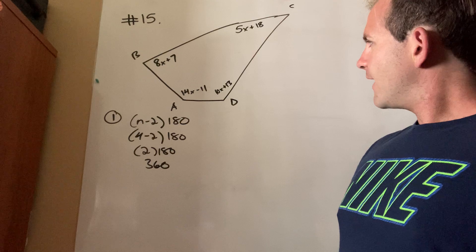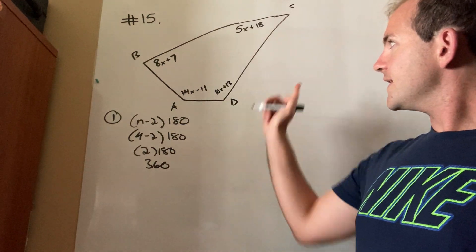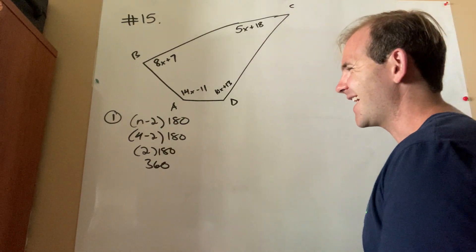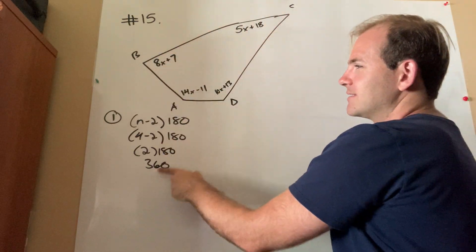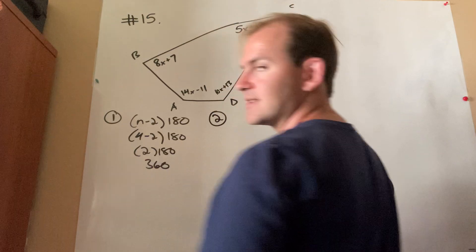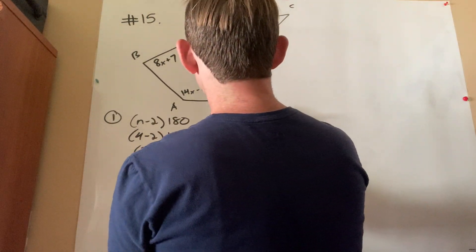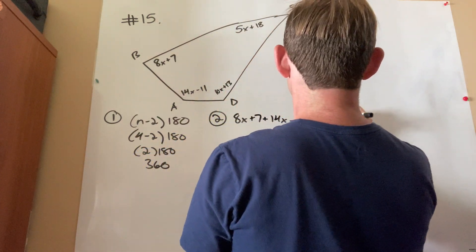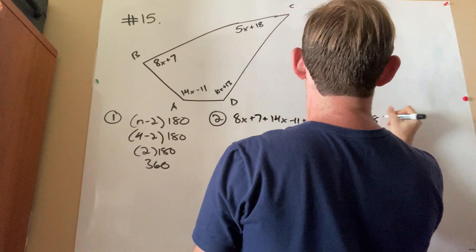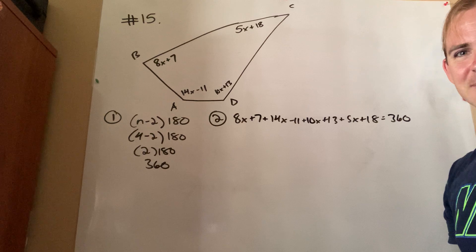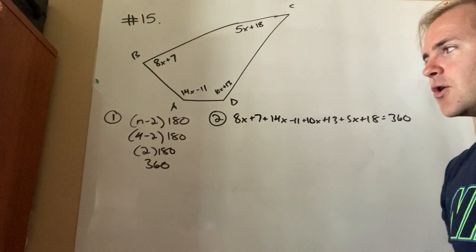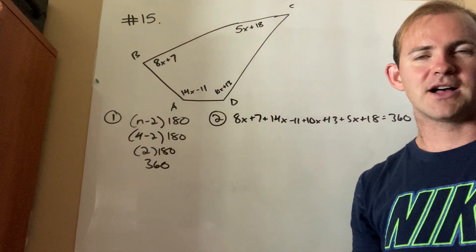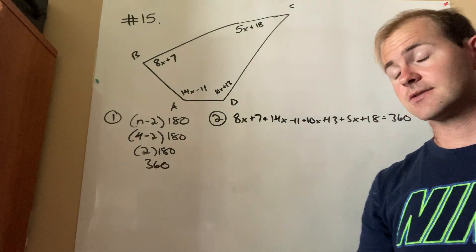Okay, so if there are 360 degrees inside, can you guys tell me what the equation would be that I should set up? Guess what? Combine like terms and solve. So, I add all of these up and set them equal to 360. So, step 2 here would be to write this ginormous equation. Let's do it. 8x plus 7 plus 14x minus 11 plus 10x plus 13. Oh, my God. I'm going to run out of board space here.